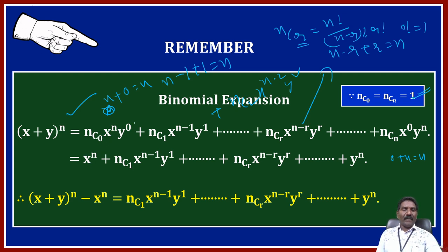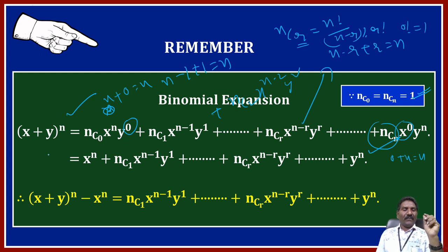Here x^n · y^0: anything to the power 0 is 1, so the first term is x^n. The expansion becomes x^n plus nC1 · x^(n-1) · y plus nC2 · x^(n-2) · y^2 plus and so on, nCr · x^(n-r) · y^r, plus and so on, y^n. Therefore x plus y whole power n minus x^n equals nC1 · x^(n-1) · y plus and so on, nCr · x^(n-r) · y^r, plus and so on, y^n.